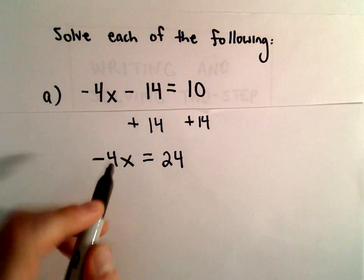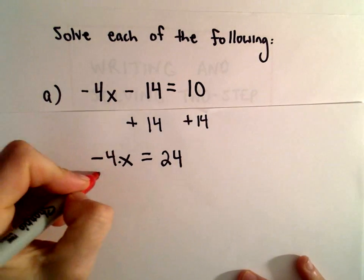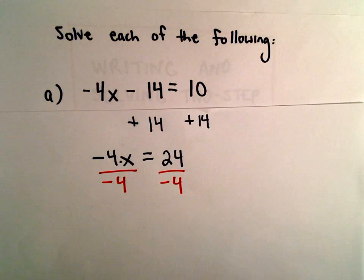And now what I need to do at this point, since I'm multiplying by negative 4, to get the x by itself, I'm just simply going to divide both sides by negative 4.